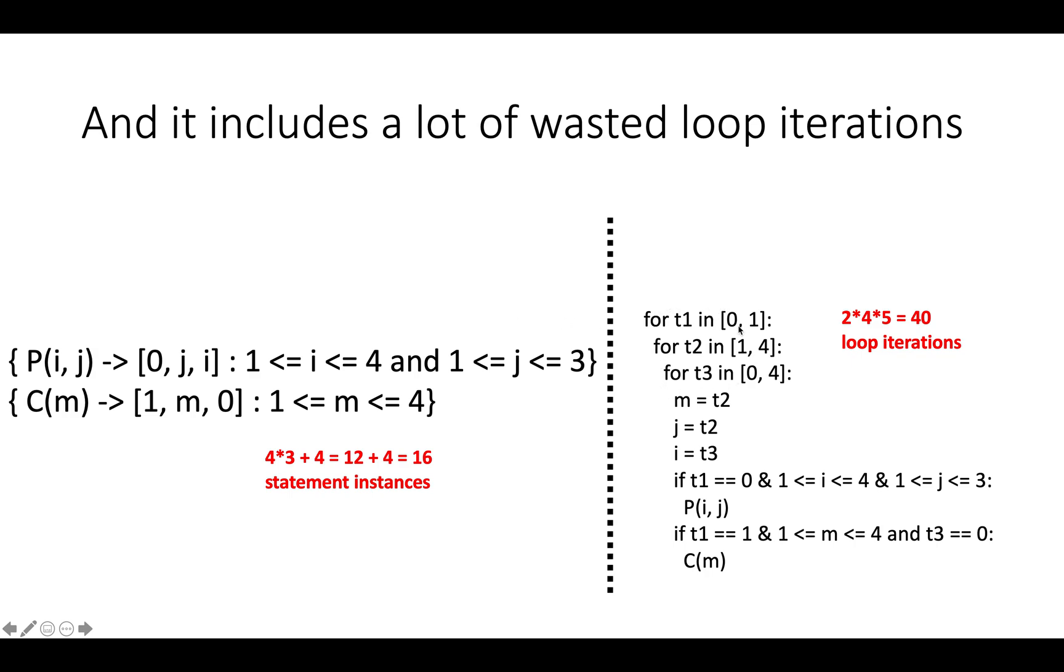But if you look at this loop nest, there's 2 times 4 times 5, which is equal to 40 loop iterations.